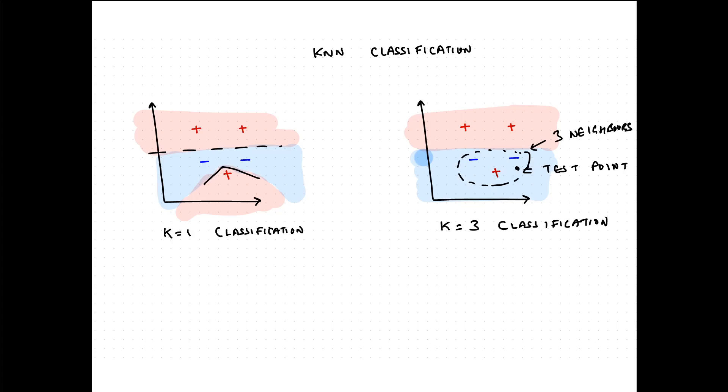Very soon we'll see the bias-variance tradeoff as we vary K, but if you stop and think about it you can already work out the answer — how the bias-variance tradeoff exists for KNN with respect to the parameter K neighbors.